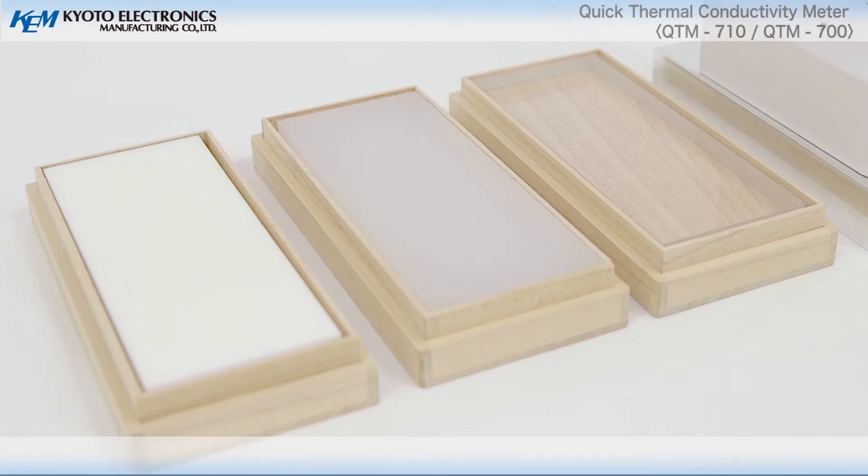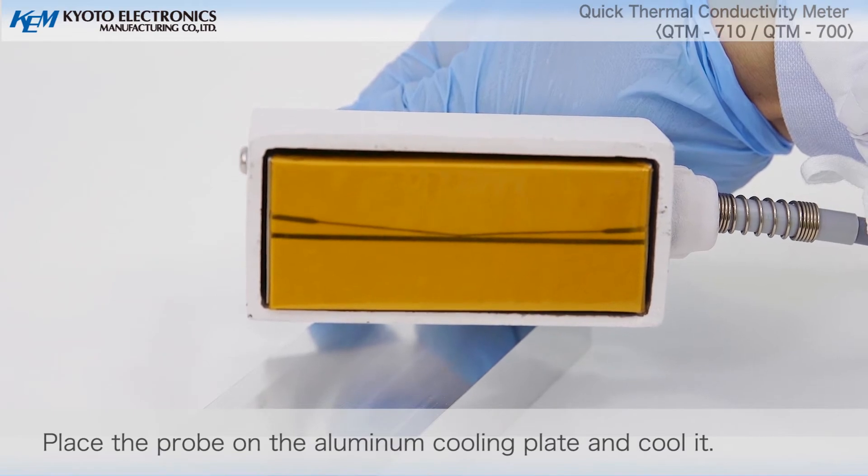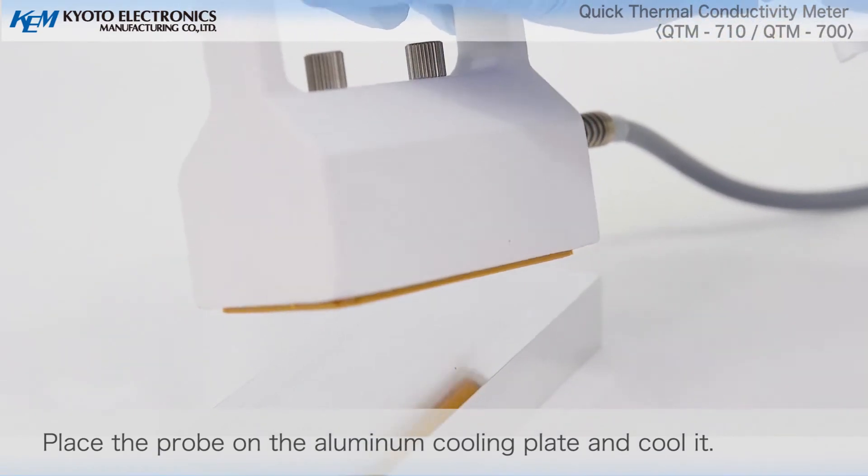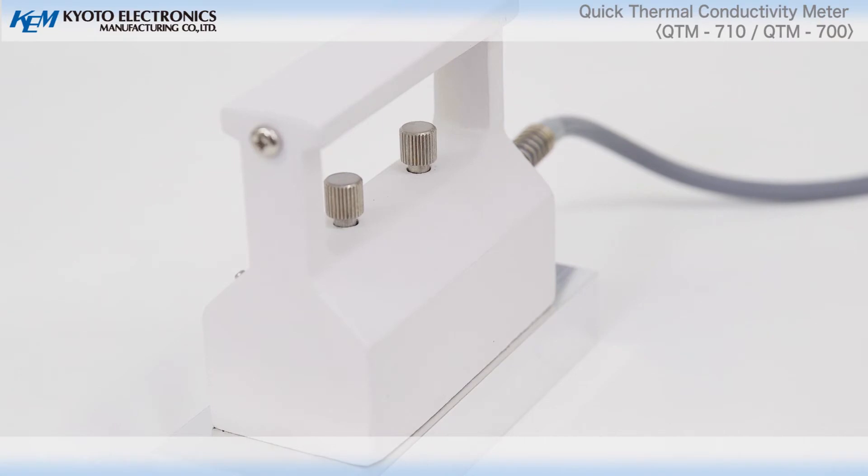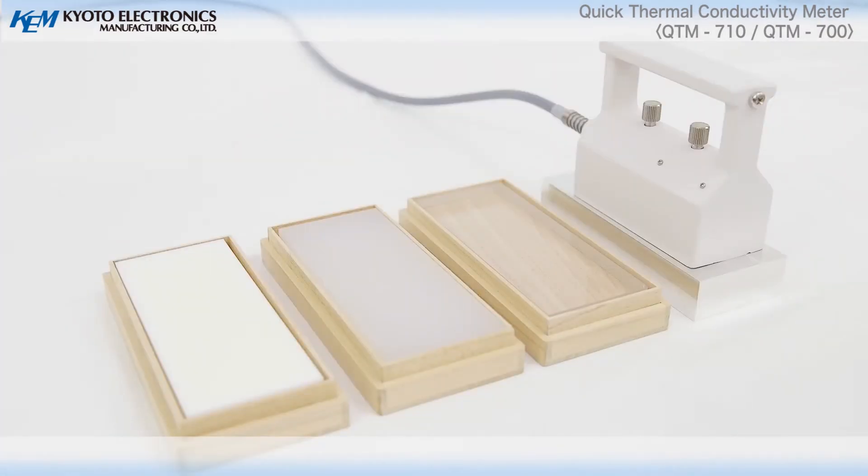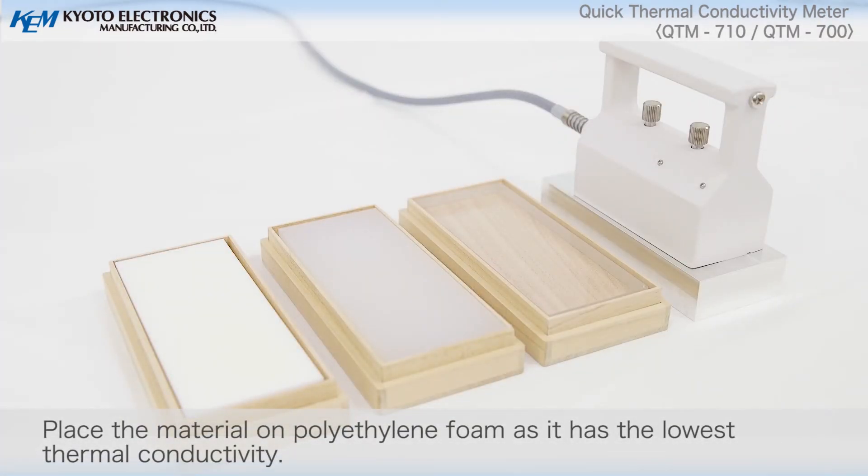Carrying out sheet material measurements. Place the probe on the aluminum cooling plate and cool it. Place the material on polyethylene foam as it has the lowest thermal conductivity.